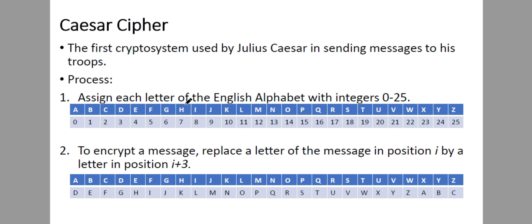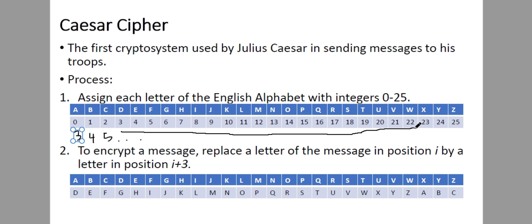To encrypt a message, replace a letter at position i with the letter at position i plus 3. So 0 plus 3 is 3, 1 plus 3 is 4, 2 plus 3 is 5, and so on. Number 3 is D, so A becomes D; B becomes E; C becomes F, and so on. In short, positions from 3 to 25 just move three places to the left, meaning Z moves to W — so W is now Z.